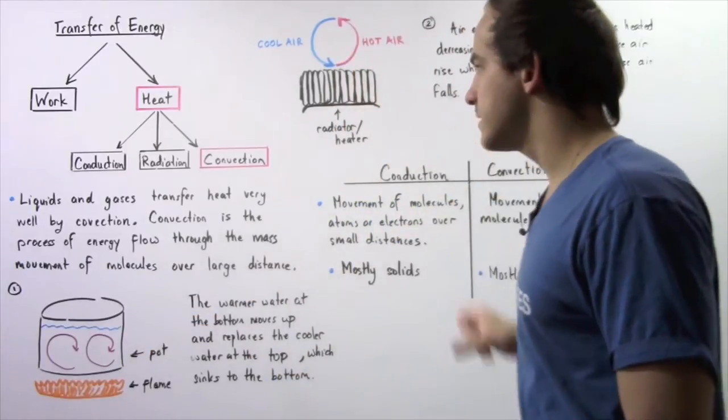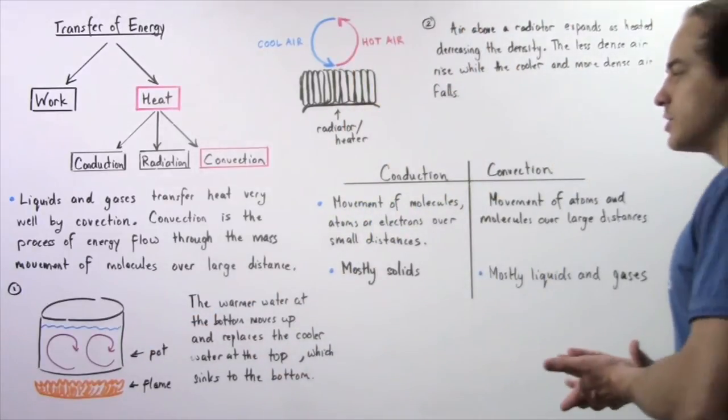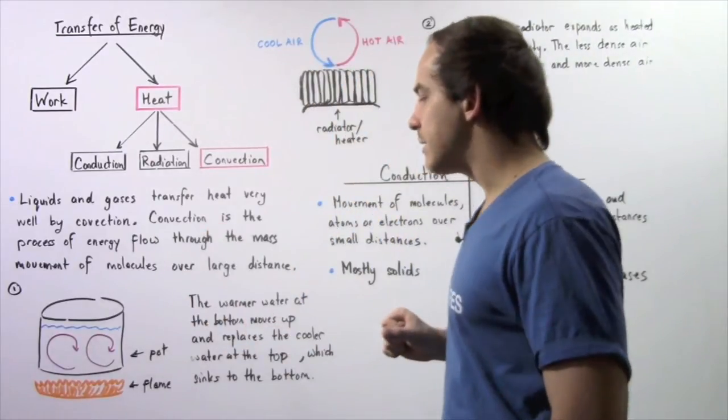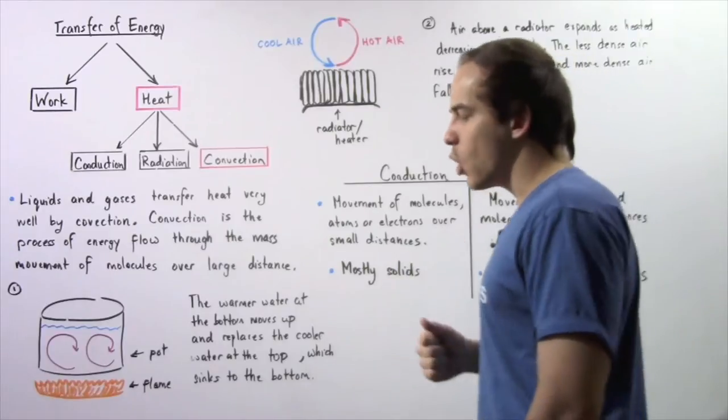Let's look at two different examples in which convection takes place. Suppose we have a pot of water and we take that pot of water and place it over a flame.